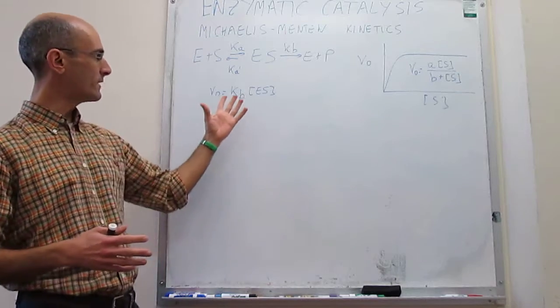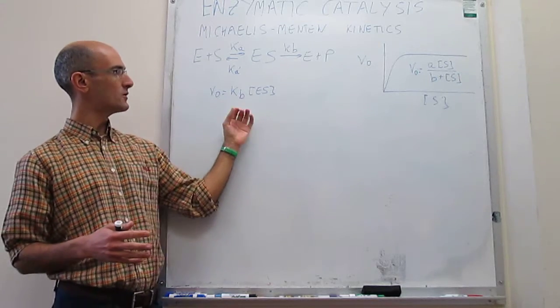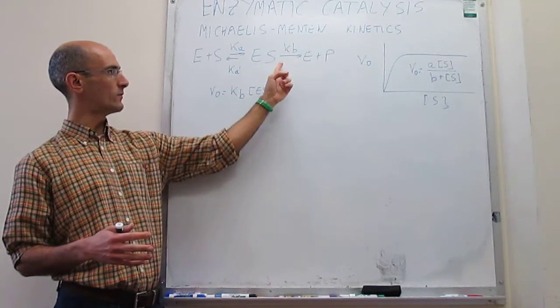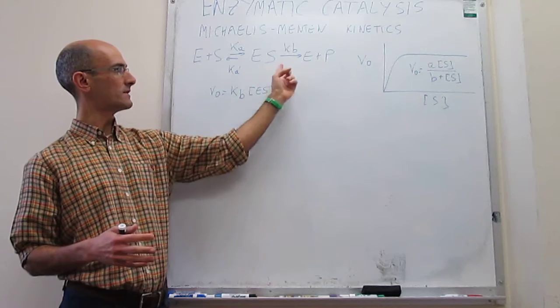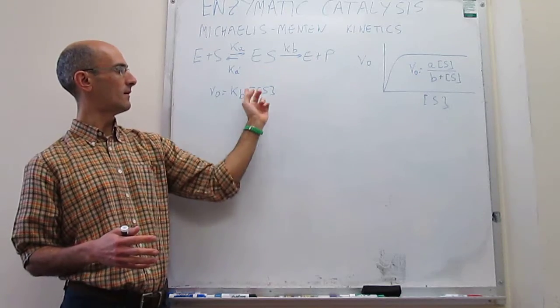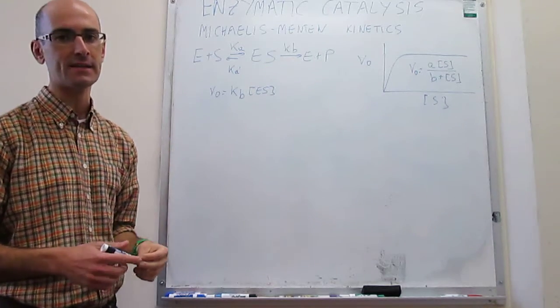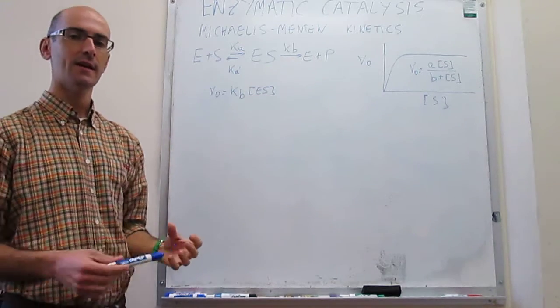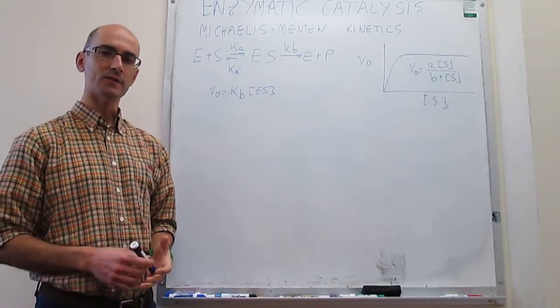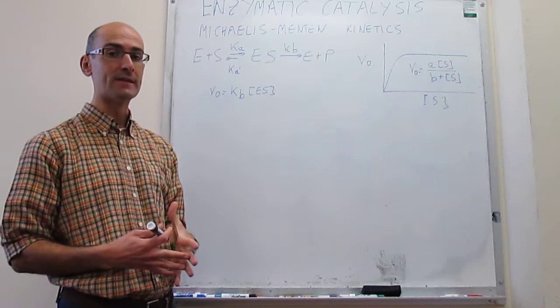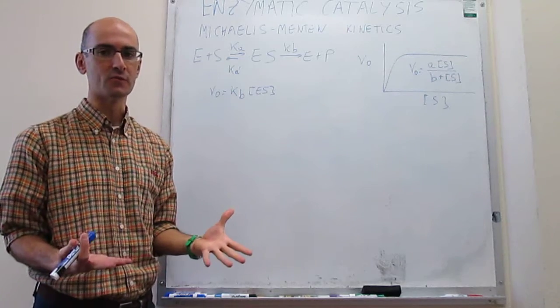The rate for product formation has to be equal to the rate constant of this step multiplied by the concentration of the ES intermediate. The question is: how do we get that ES intermediate concentration?